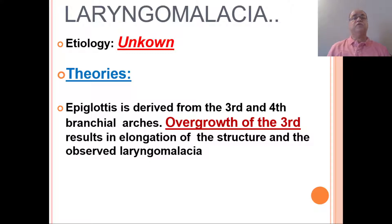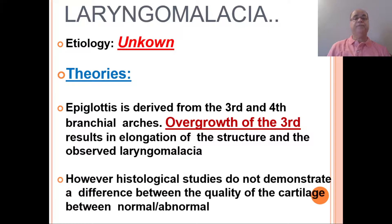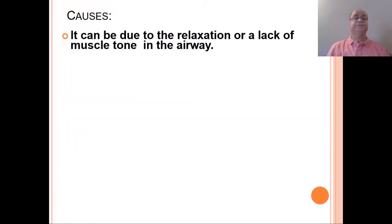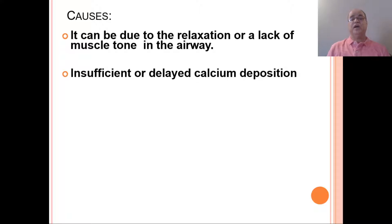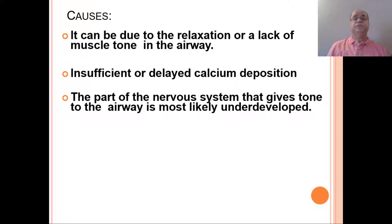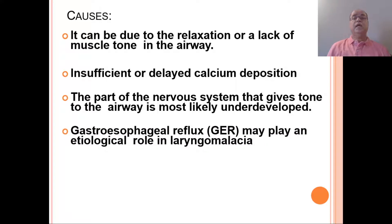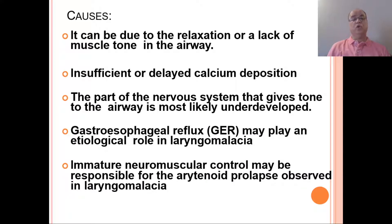Because the epiglottis is derived from the third and fourth branchial arches, overgrowth of the third can result in elongation of the structures, causing laryngomalacia — though histological studies of normal and abnormal cartilages have not demonstrated any difference. Another theory is relaxation or lack of muscle tone in the airway, or insufficient or delayed calcium deposition, or that the part of the nervous system giving tone to the airway is underdeveloped. Gastroesophageal reflux is considered an important etiological factor, and immature neuromuscular control may be responsible for the arytenoid prolapse observed in laryngomalacia.